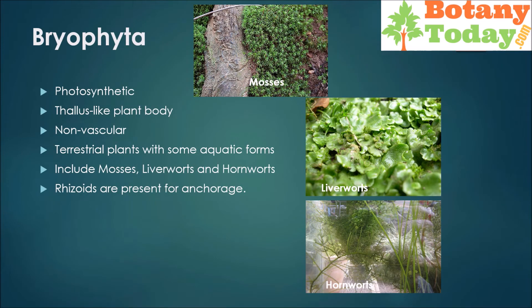Bryophyta are photosynthetic thallus-like plants with no vascular system. These are terrestrial plants with some being aquatic, and are generally found in damp and moist places. These include liverworts, horned liverworts, and mosses. These have rhizoids — root-like structures — for anchorage.